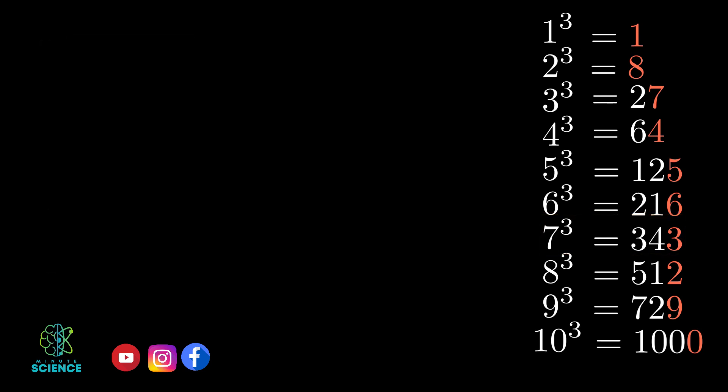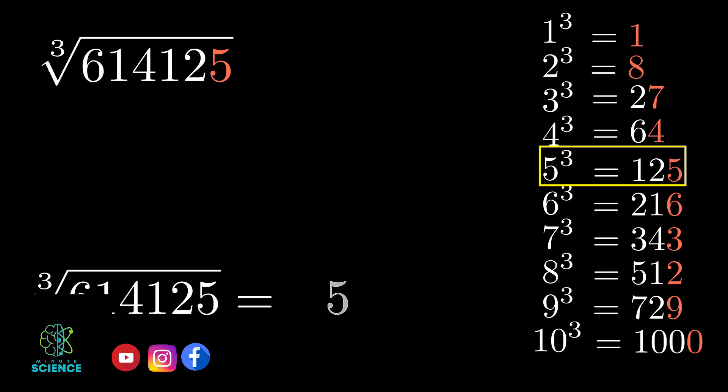Let us try another example. Cube root of 614125 is how much? Here, the last digit is 5. By matching it with 1 to 10 cube digits, we get 5 as a matching number. As the last digit of 5 cube is 5, the last digit of the answer is 5.